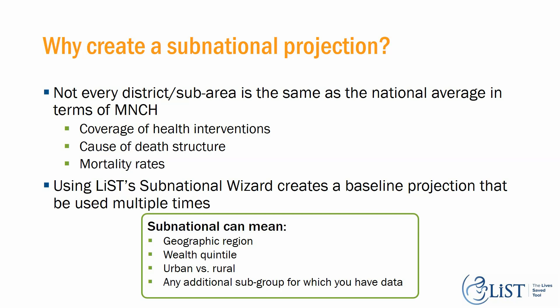Using the LIST subnational wizard creates a baseline projection that could be used multiple times for different analyses. Subnational in this context can mean geographic region, wealth quintile, urban or rural region, and any subnational group for which you have data.